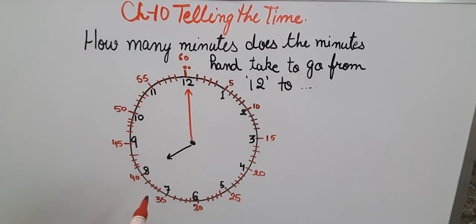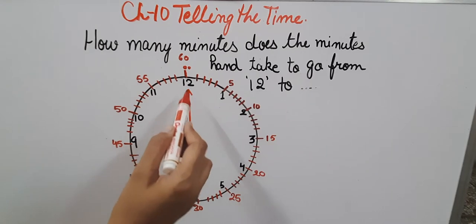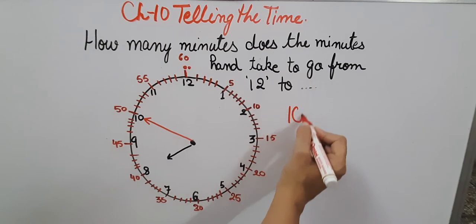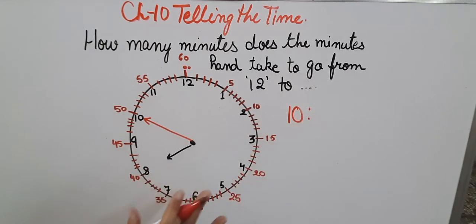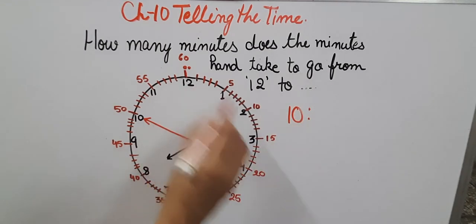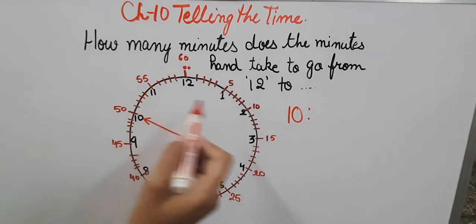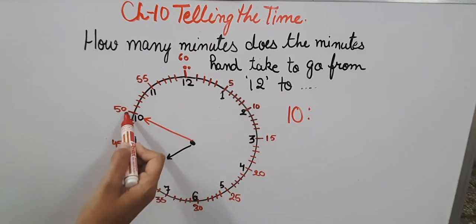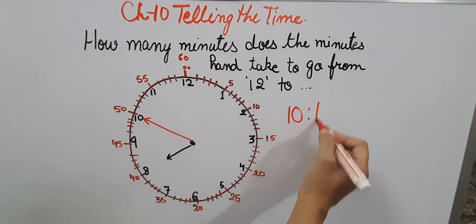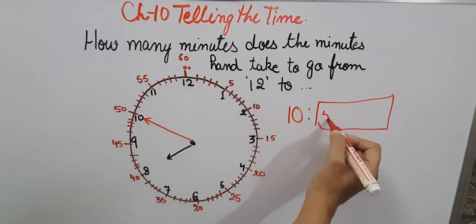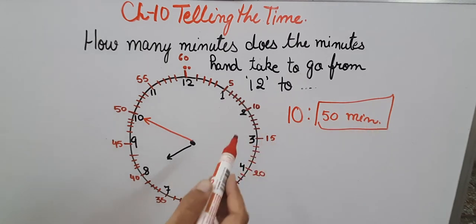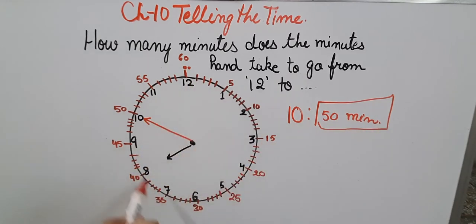Let's take another example. If it is on 12 and now if it is reaching at 10, how many minutes does it take? Let's count it: 5, 10, 15, 20, 25, 30, 35, 40, 45, 50. So it will take 50 minutes to reach from 12 to 10.